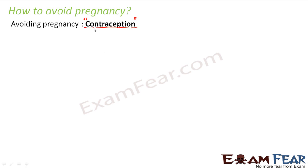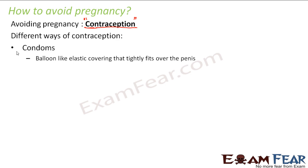There are various ways by which pregnancy can be avoided. The first way is the use of condoms. Condoms are balloon-like elastic coverings that tightly fit over the penis. These work by stopping the fusion of the male and female gametes, because pregnancy happens when the sperm and the ovum fuse.